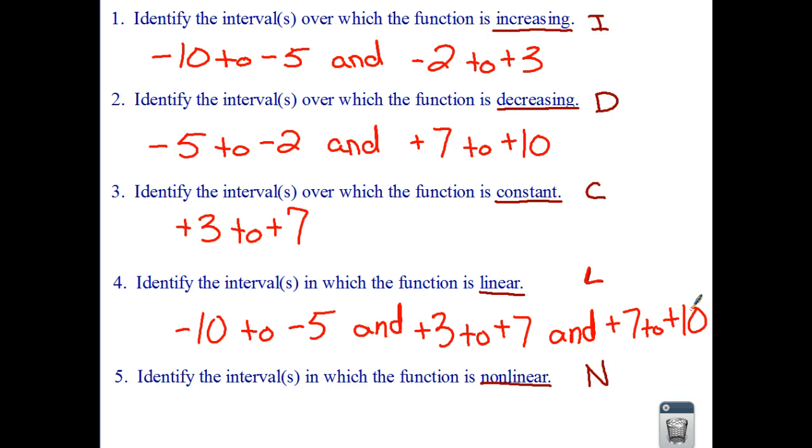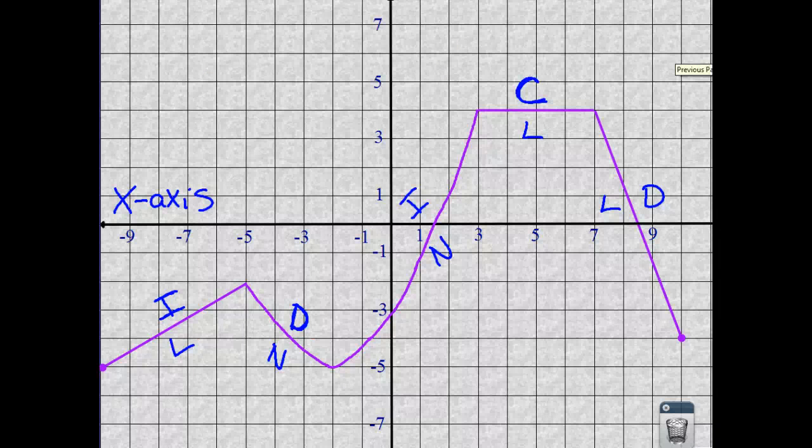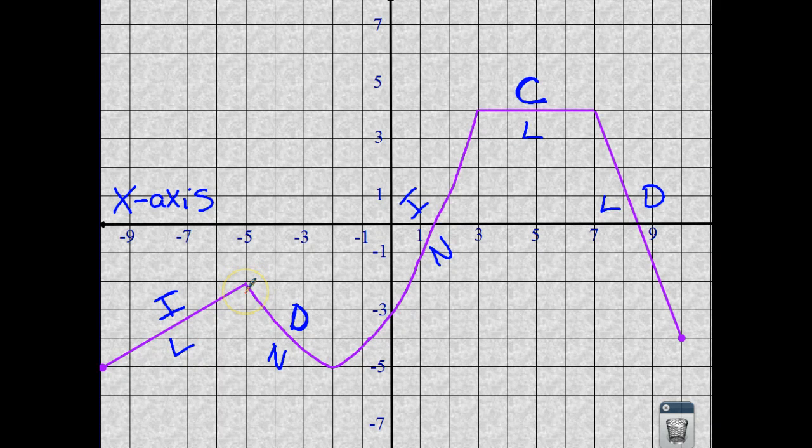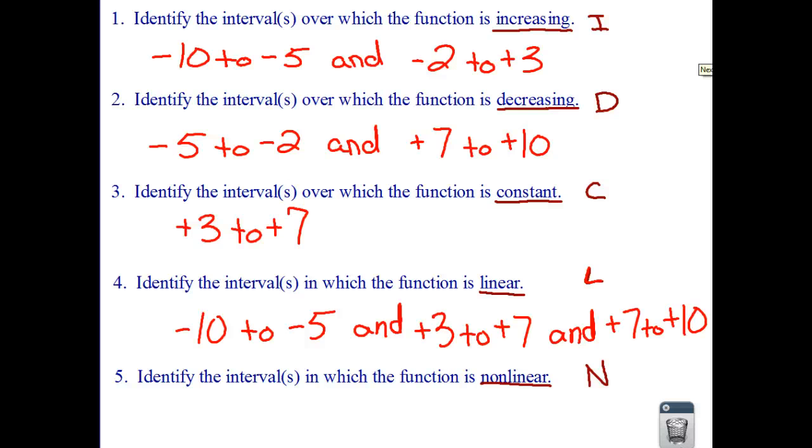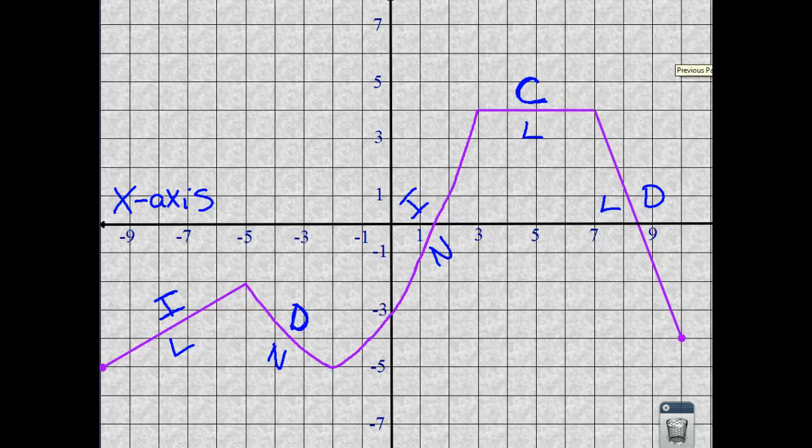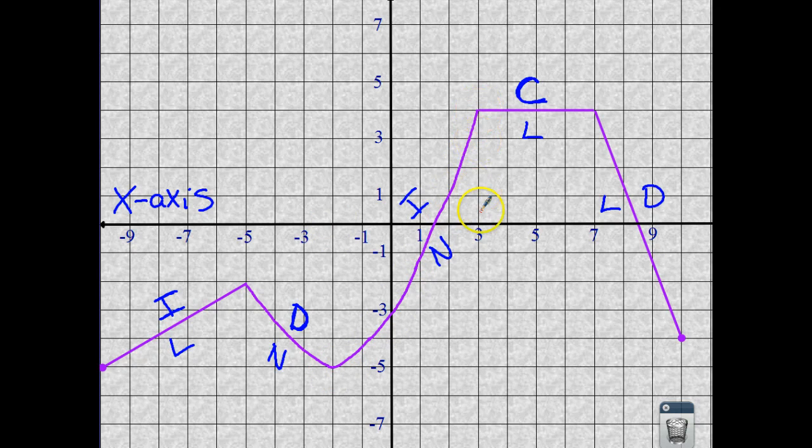Last one. We are looking for nonlinear. And nonlinear were these arc-looking parts of your line. And that was from negative 5 to negative 2, and one more. Nonlinear was from negative 2 to positive 3.